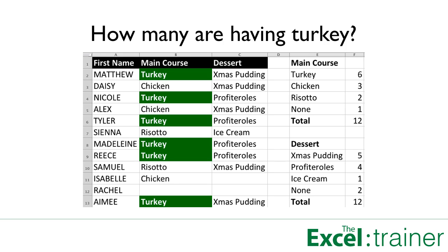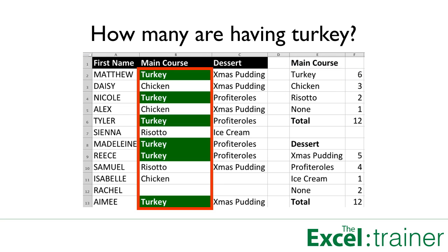It's time to plan the office Christmas party and we need to advise the restaurant how many people are having turkey, how many having chicken, and how many having risotto — and the same for desserts. One way to do this is to use the COUNTIF function. In this example there'll be COUNTIF functions in F2, F3, and F4, each counting the number of times the word to the left in column E appears in the range B2 to B13.